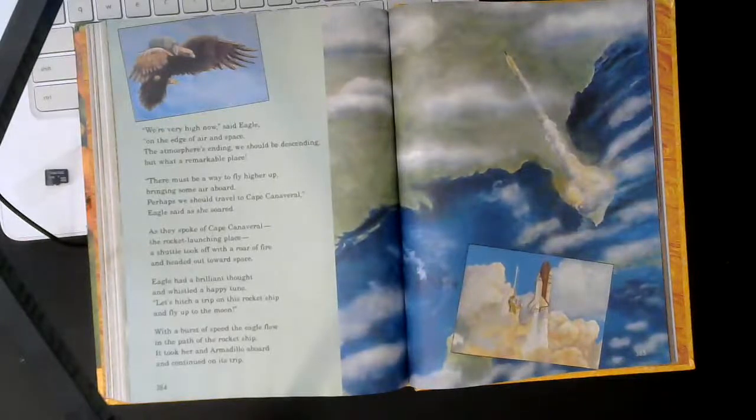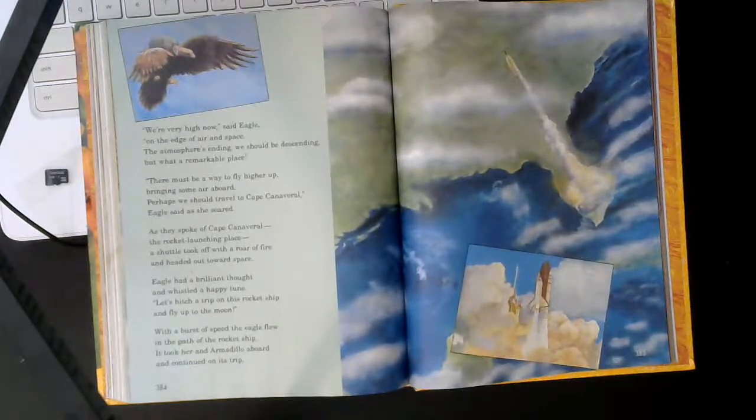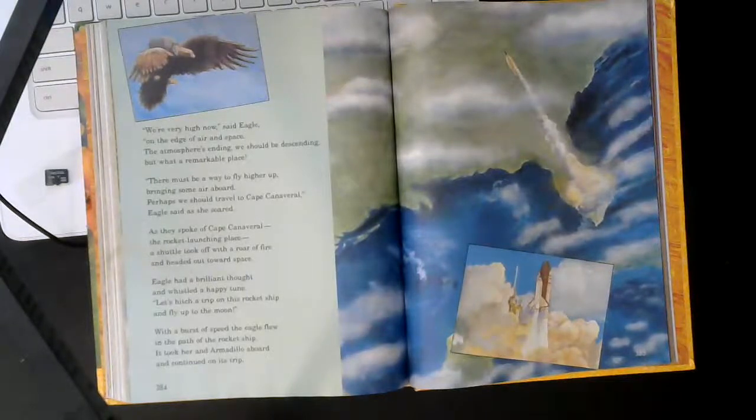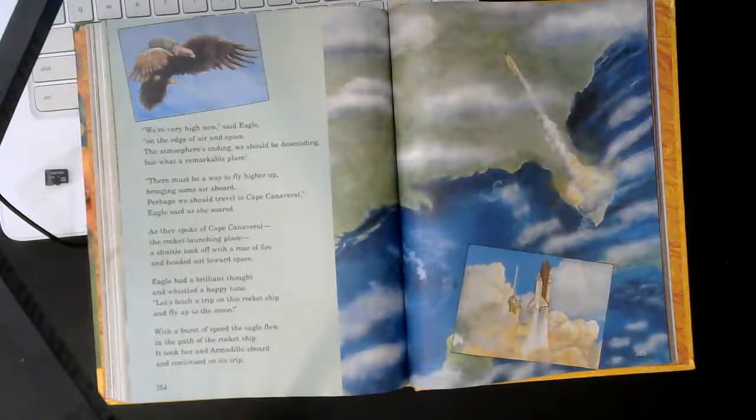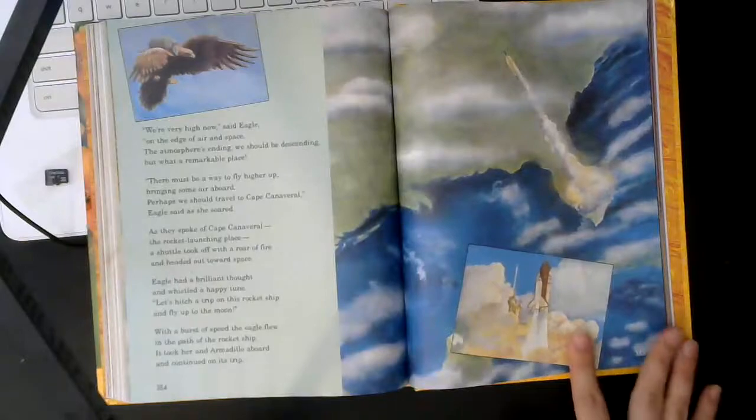As they spoke of Cape Canaveral, the rocket launching place, a shuttle took off with a roar of fire and headed out towards space. Eagle had a brilliant thought and whistled a happy tune. Let's hitch a trip on this rocket ship and fly up to the moon. With a burst of speed, the eagle flew in the path of the rocket ship. It took her and Armadillo aboard and continued on its trip.